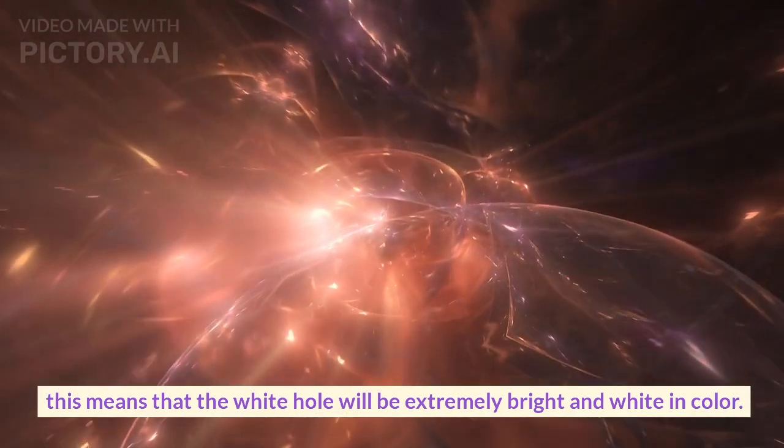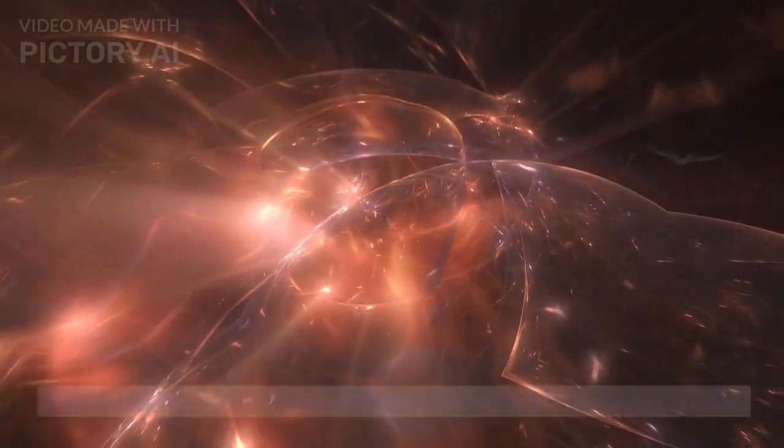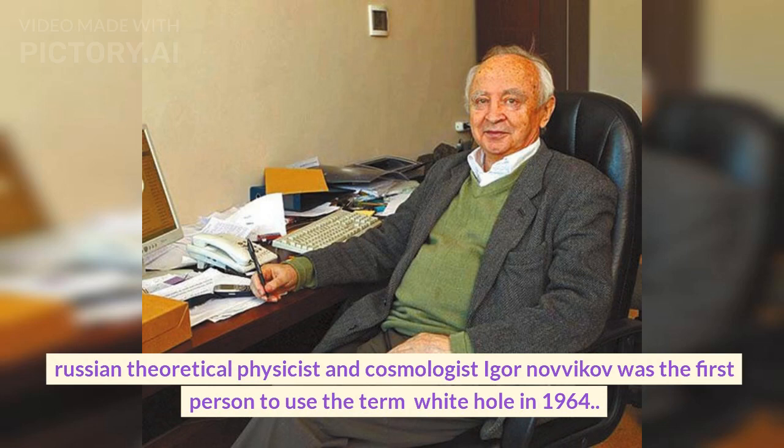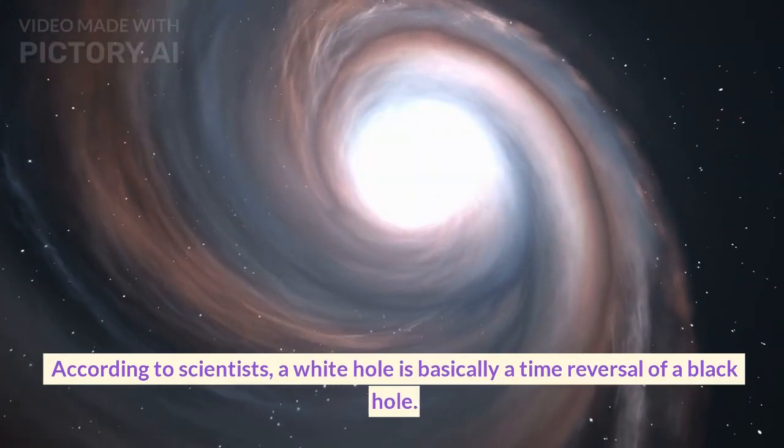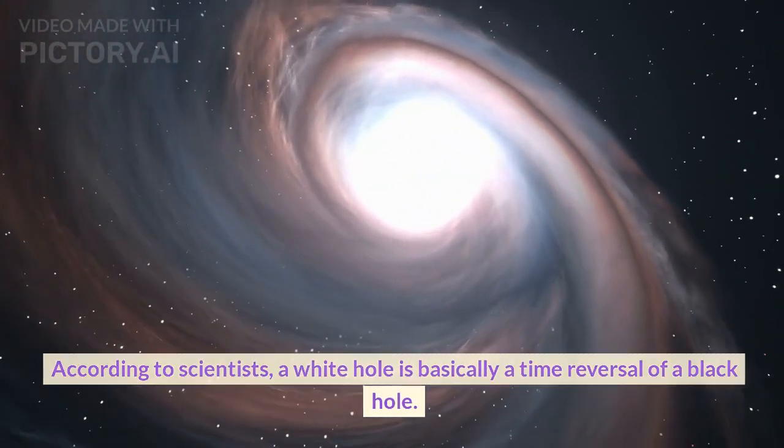This means that the white hole will be extremely bright and white in color. Russian theoretical physicist and cosmologist Igor Novikov was the first person to use the term white hole in 1964. According to scientists, a white hole is basically a time reversal of a black hole.